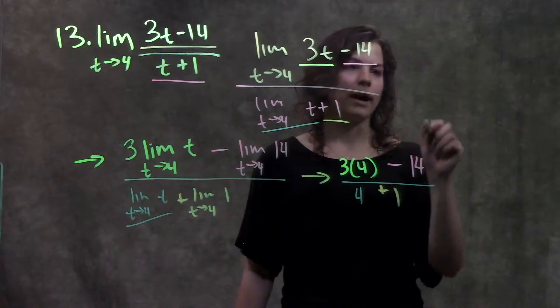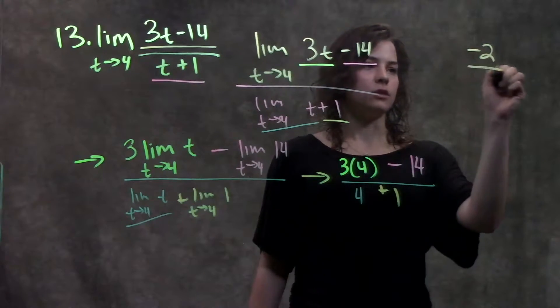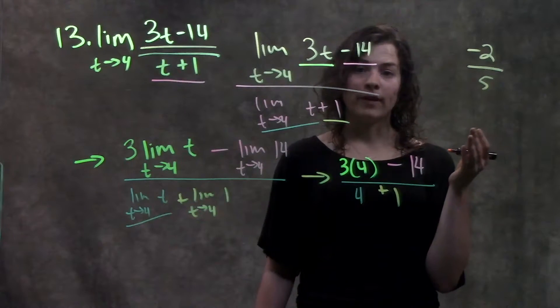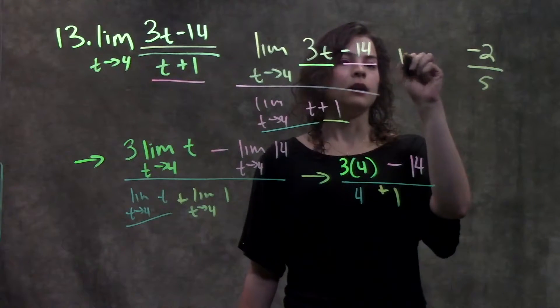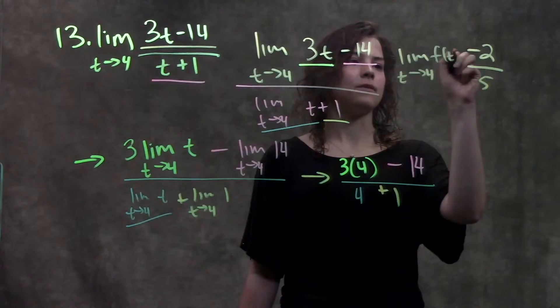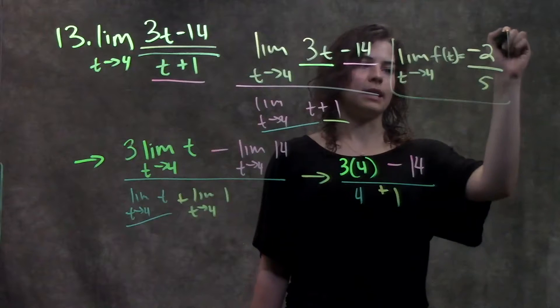3 times 4 gives me 12 minus 14. I have negative 2 over 4 plus 1 is 5. I can't simplify this fraction any further. So that's just my answer. The limit as t approaches 4 of f of t is equal to negative 2 over 5.